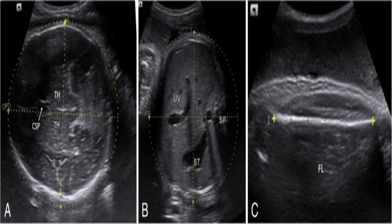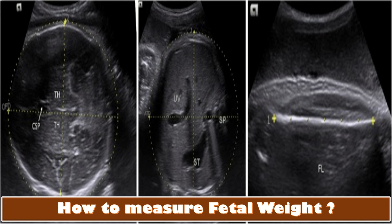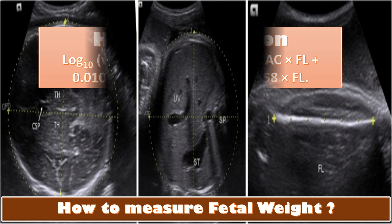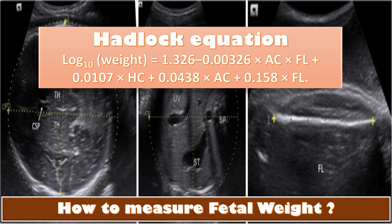With fetal biometry, we can estimate the fetal weight. The most used equation of estimated fetal weight worldwide is the three-parameter Hadlock equation based on head circumference, abdominal circumference, and femur length: log₁₀(weight) = 1.3 − 0.00326 × (abdominal circumference × femur length) + 0.0107 × head circumference + 0.0438 × abdominal circumference + 0.158 × femur length. Putting our measurements into this equation gives us the estimated fetal weight.